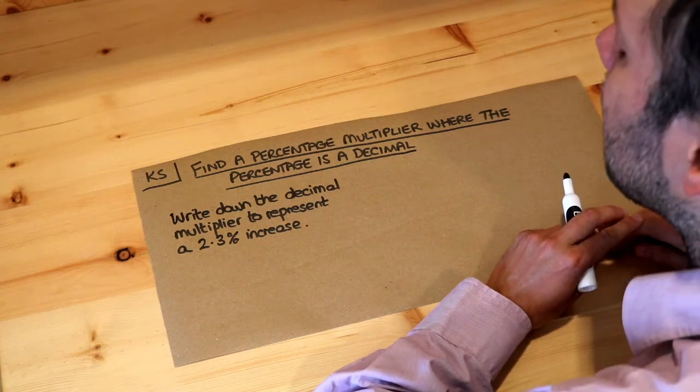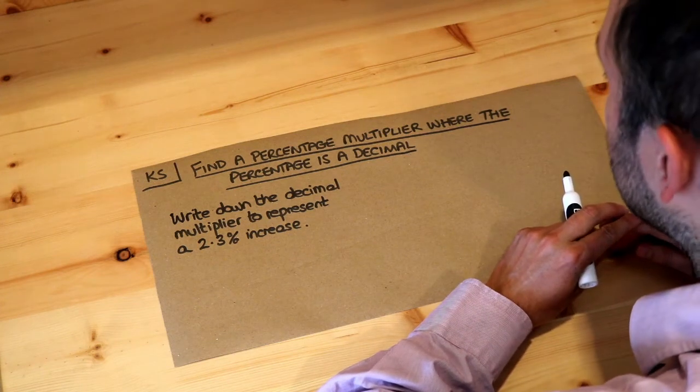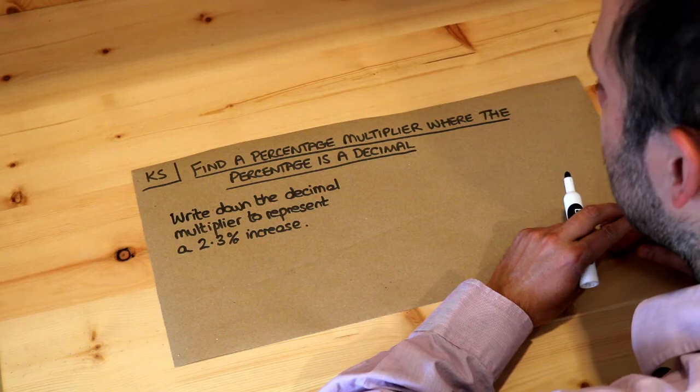Hello and welcome to Dr. Austin Maas' key skill video on finding a percentage multiplier where the percentage is a decimal.